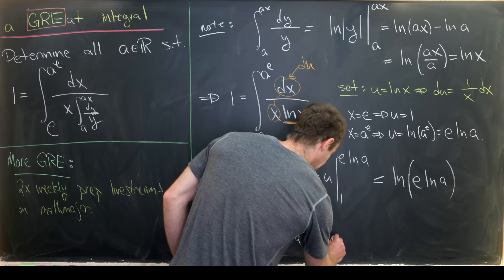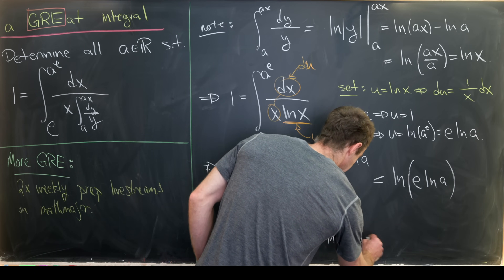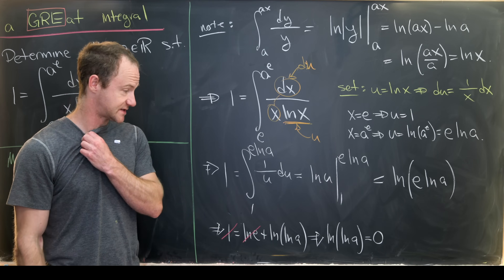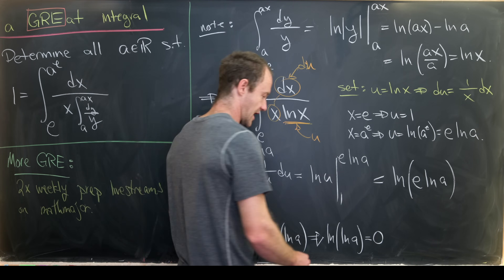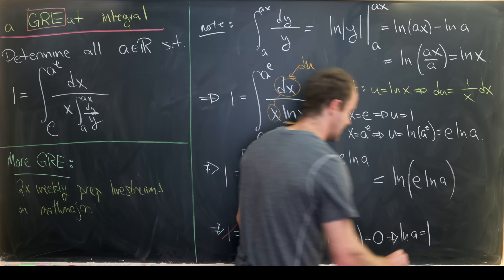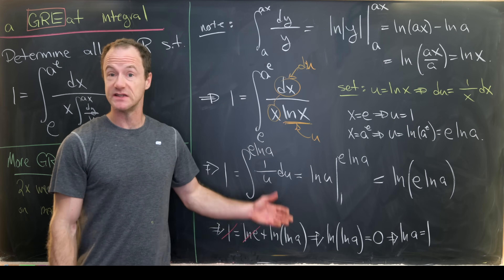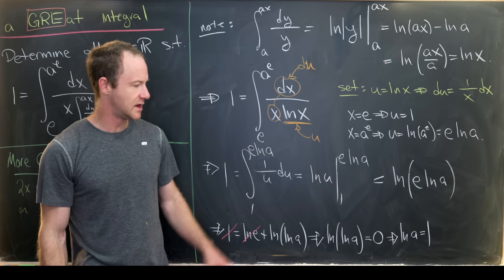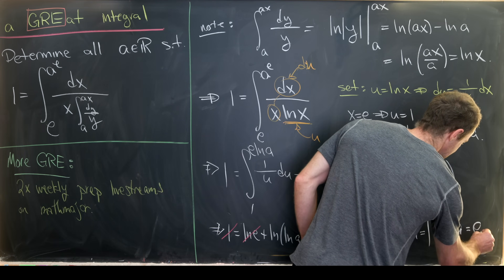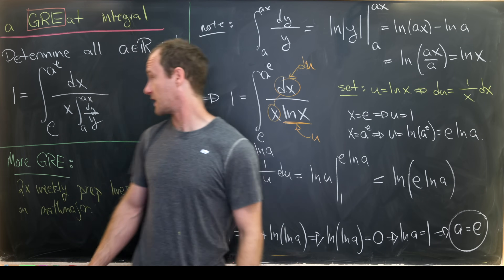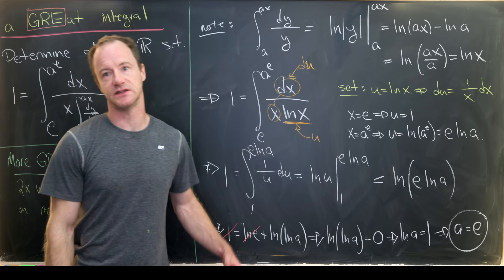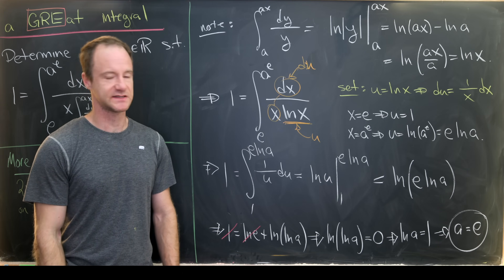So we get ln(ln(a)) equals 0. Exponentiating once gives us the natural log of a equals 1, because e to the 0 is 1. Exponentiating one more time gives us a equals e. That's our final answer — there's only one value of a, and it turns out to be Euler's constant e.